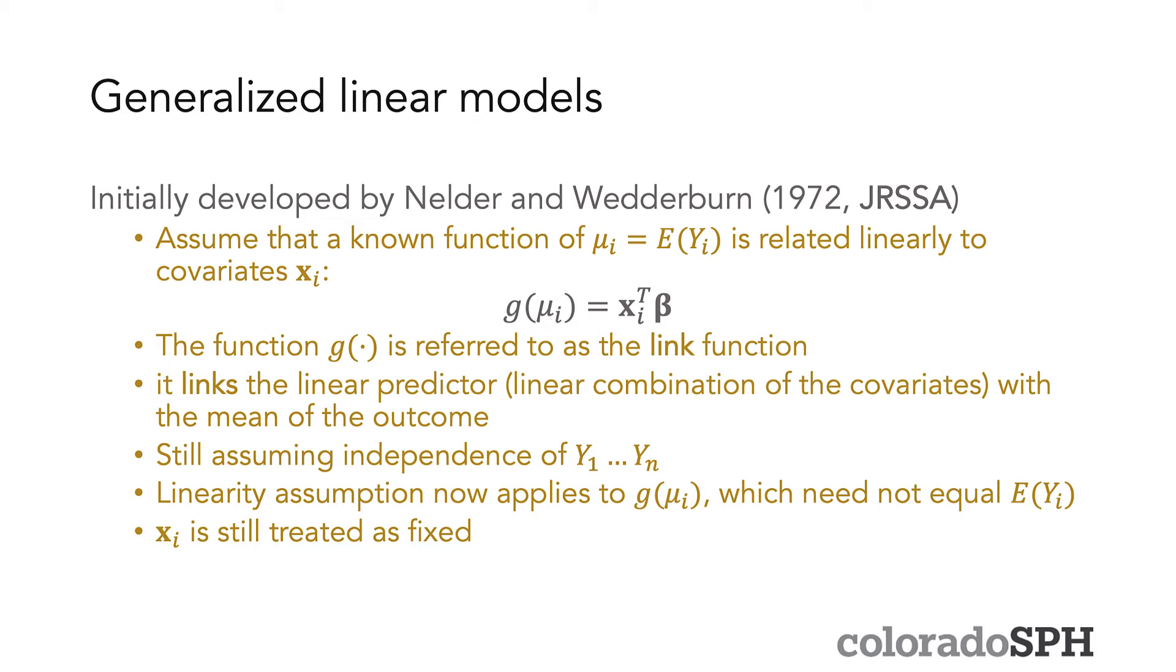And this link that does that to the expectation of Y_i so that the expectation of Y_i is in the same range of X_i^T beta is called a link function because it links or connects the linear predictor, which is what this X_i^T beta is called, with the mean of the outcome, which is expectation of Y_i or mu.